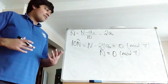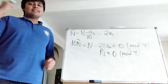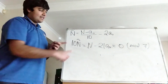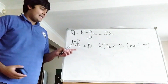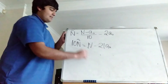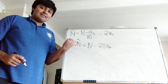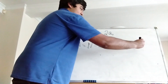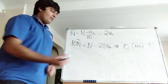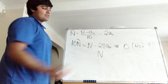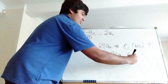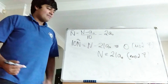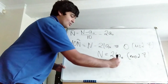Now for the reverse direction: if n-tilde is a multiple of 7, then N is a multiple of 7. Going back to the equation 10·n-tilde = N - 21a_0: if n-tilde is a multiple of 7, then the left-hand side is 10 times a multiple of 7, so certainly a multiple of 7. Then N - 21a_0 ≡ 0 mod 7, so N ≡ 21a_0 mod 7. But 21a_0 = 7 × 3a_0 is a multiple of 7, so N ≡ 0 mod 7.